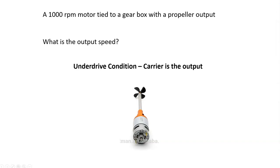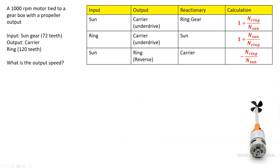So let's look at the problem. We've got an underdrive condition: a 1000 RPM motor tied to a gearbox. The input is going to be the sun gear, and we're going to give that 72 teeth. The output is the carrier, and the ring gear has 120 teeth. So what is the output speed? These are the same gears in both scenarios.